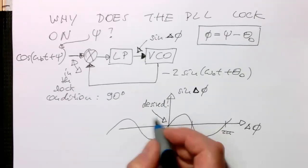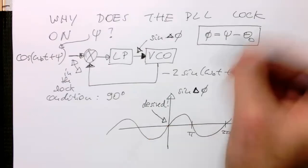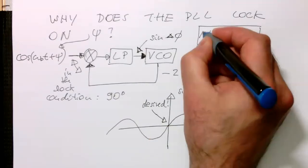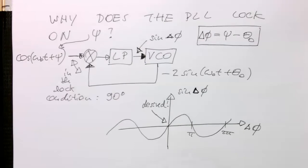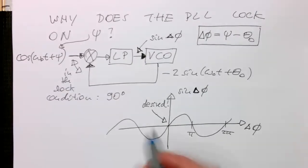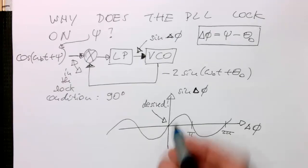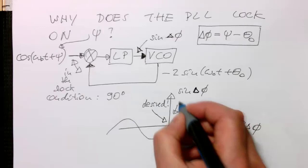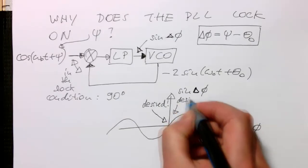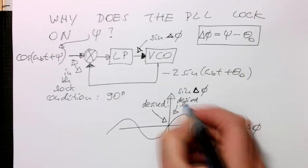Yeah, so here, in this case here, I should call this delta phi. And so at this desired point here, at this point here, the phase will be zero. And so, therefore, that's a perfect lock condition here.